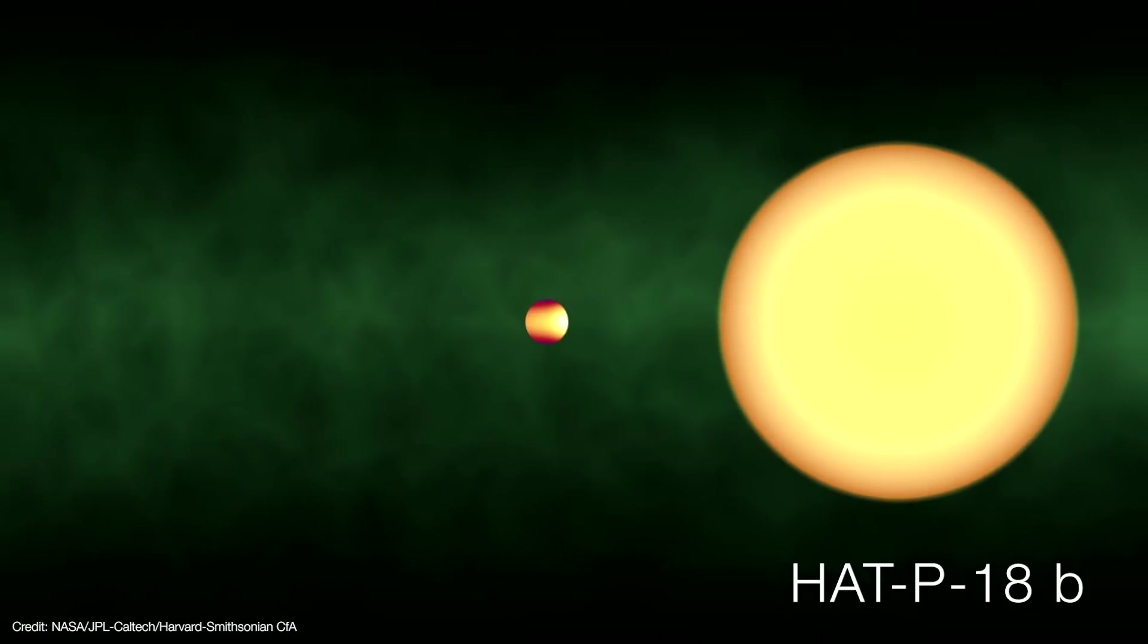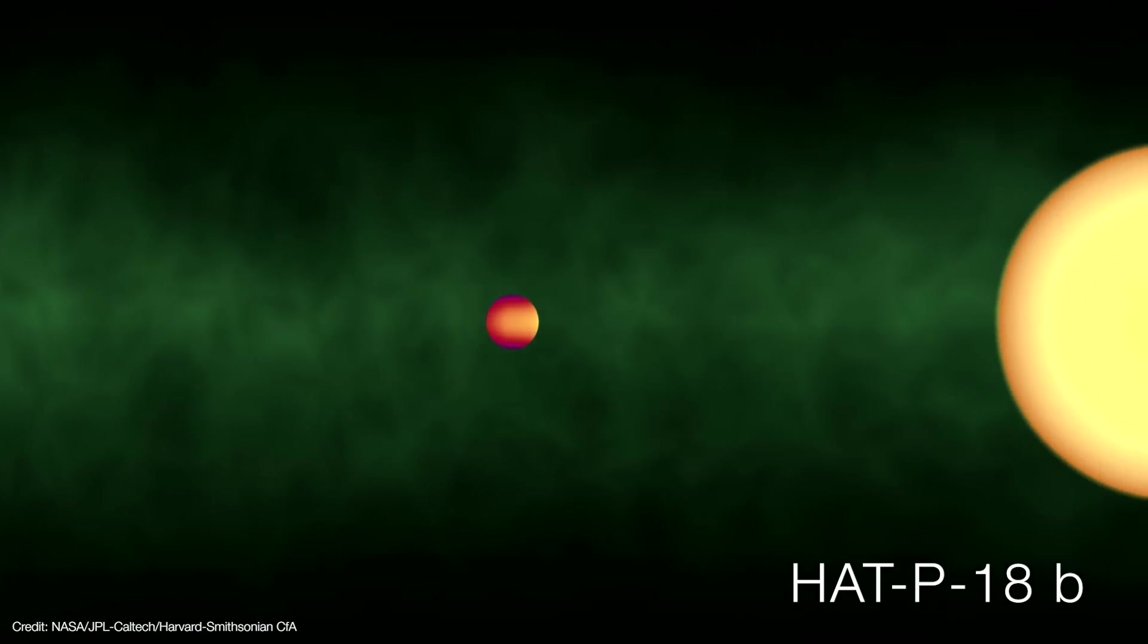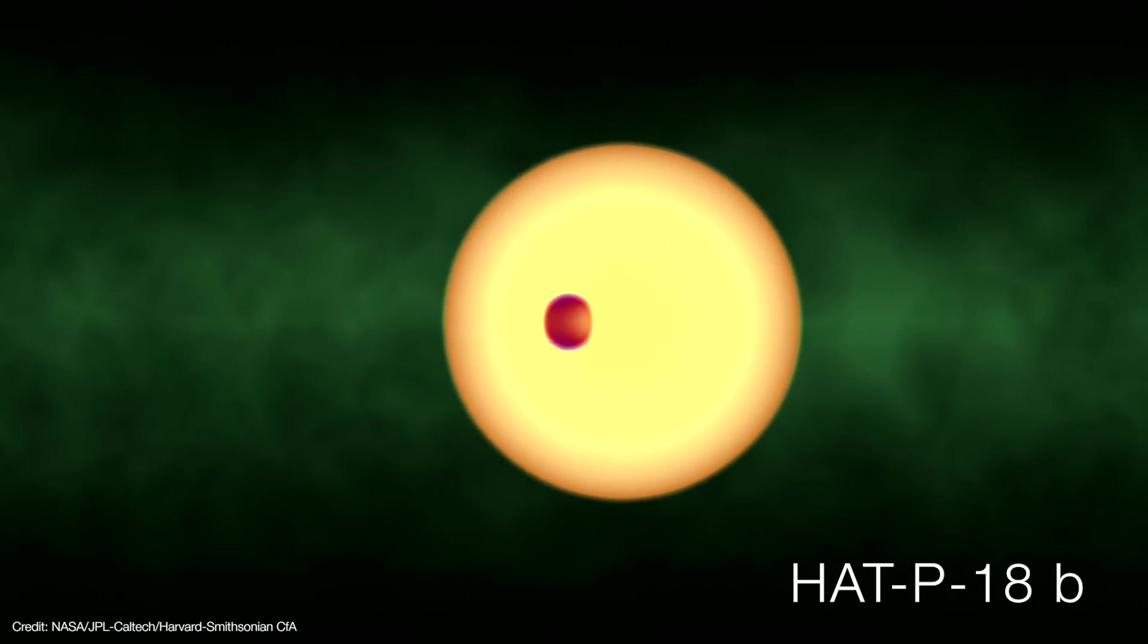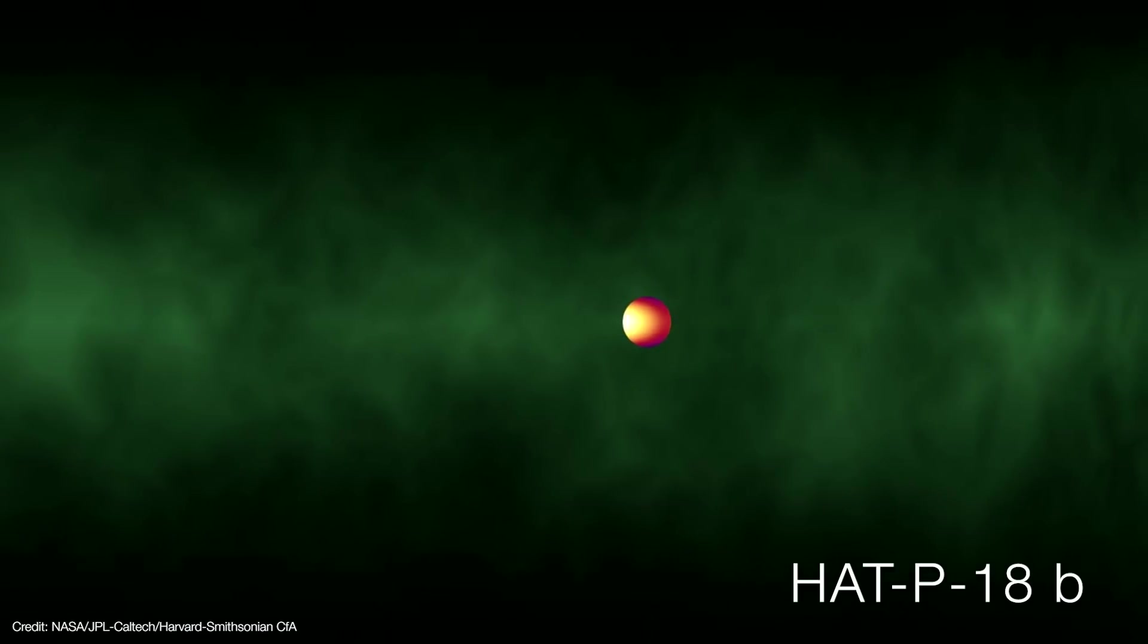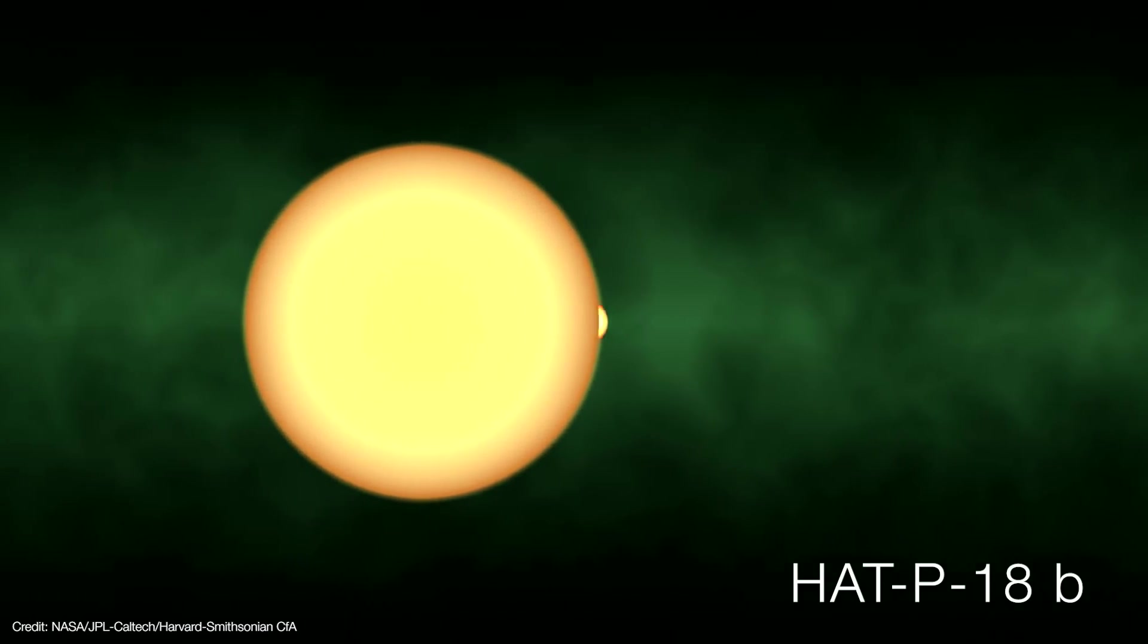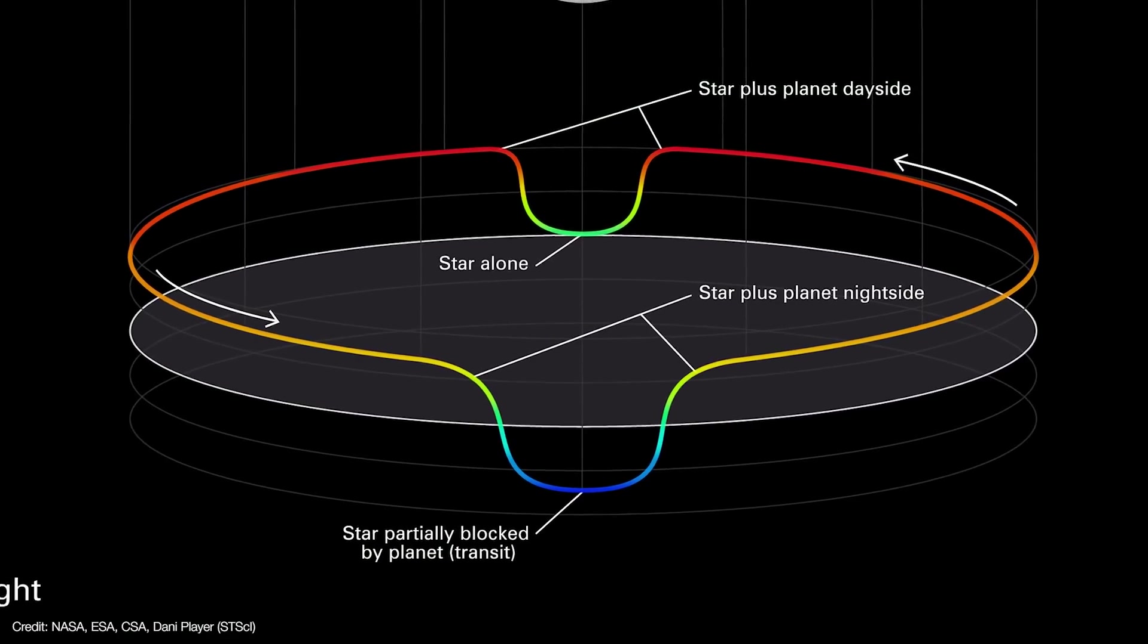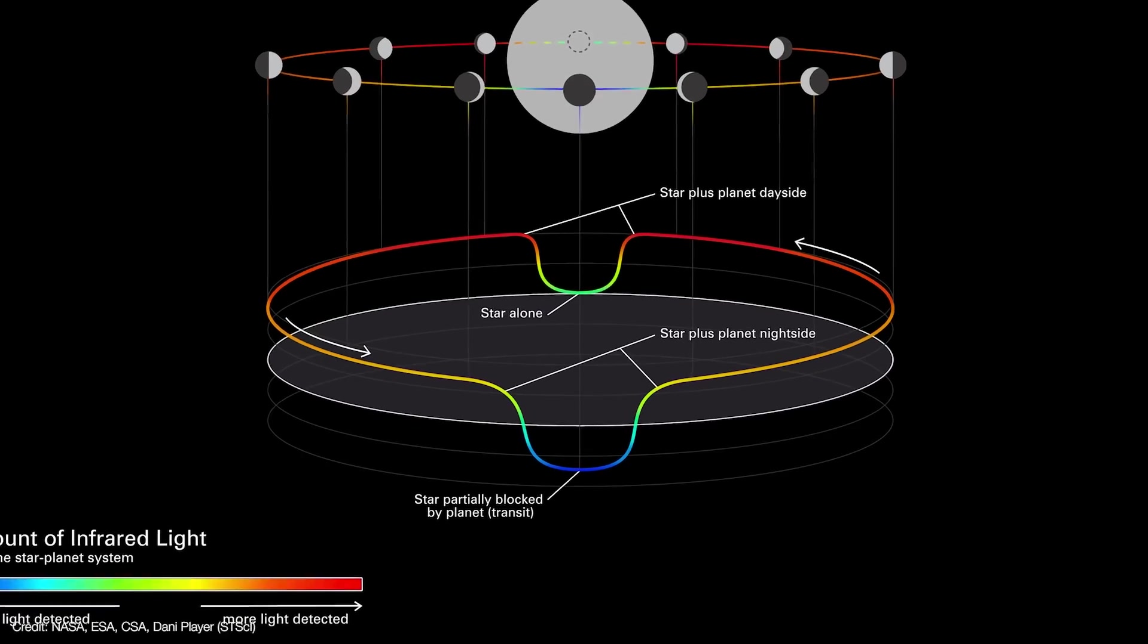So one early use of time series imaging will be to monitor the exoplanet HAT-P-18b as it passes behind its host star. As it does so, starlight reflecting off the planet is gradually cut off. The shape of the resulting light curve gives an insight into the density and thermal structure of the planet's atmosphere.